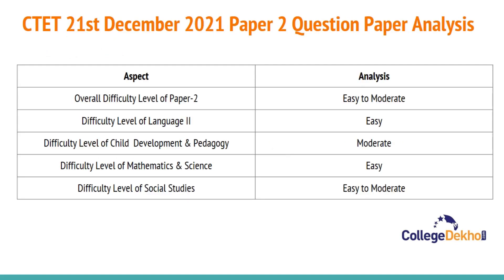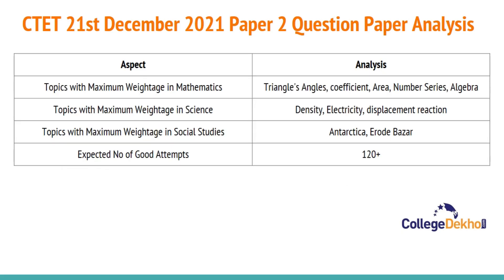Now let us look at the detailed question paper analysis for today's Paper 2 exam. The overall difficulty level of Paper 2 was easy to moderate. The difficulty level of Language was easy, Child Development and Pedagogy was moderate, Mathematics and Science was very easy, and Social Studies was easy to moderate.